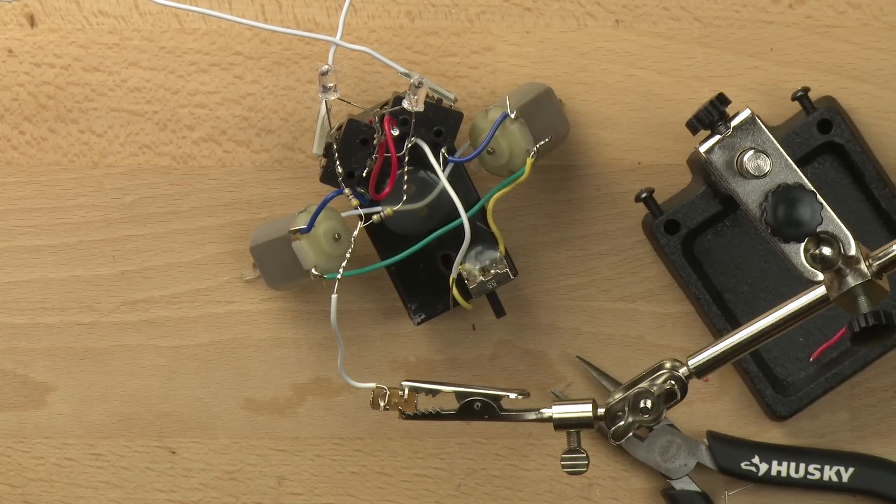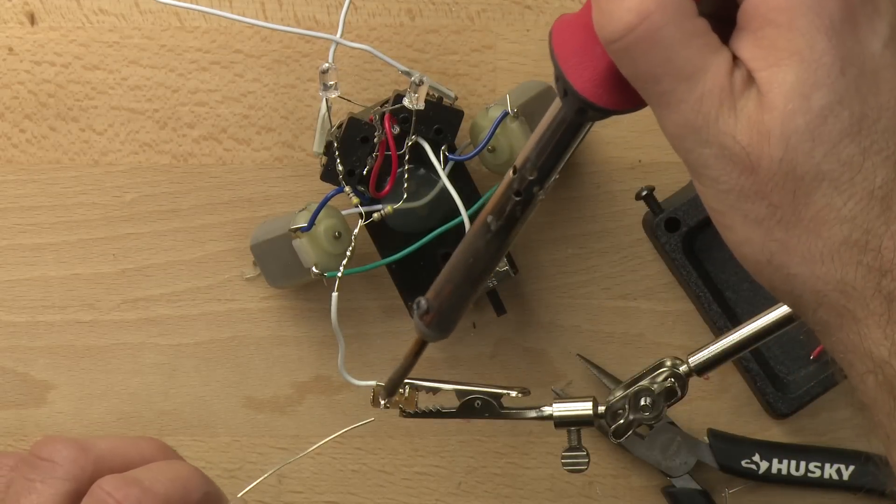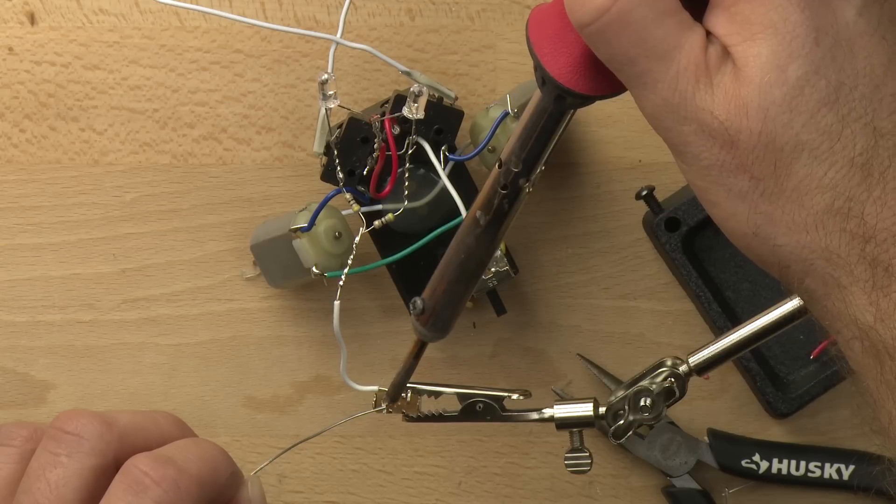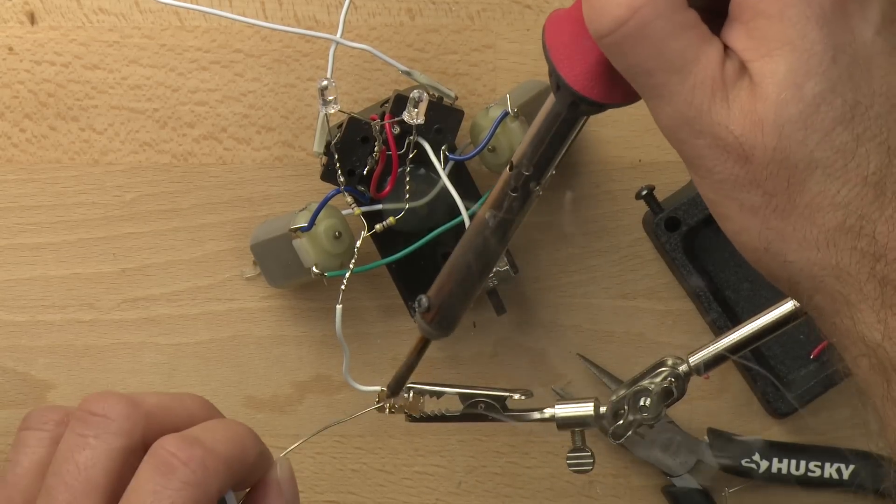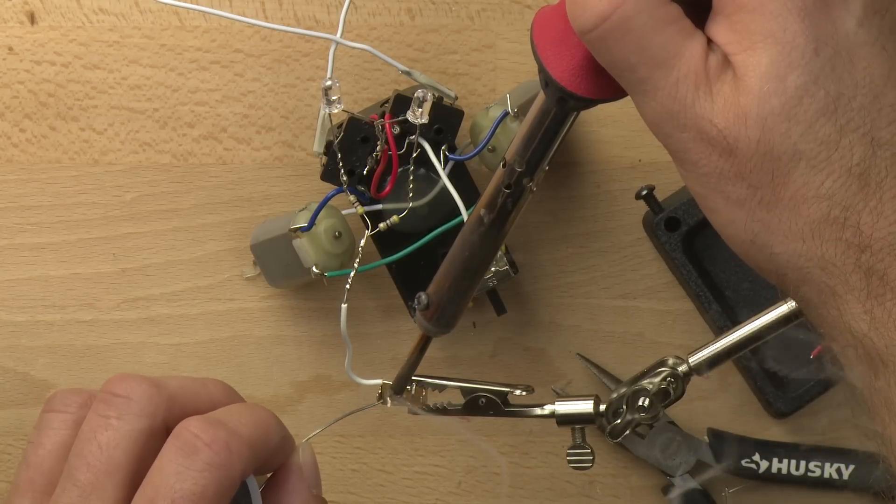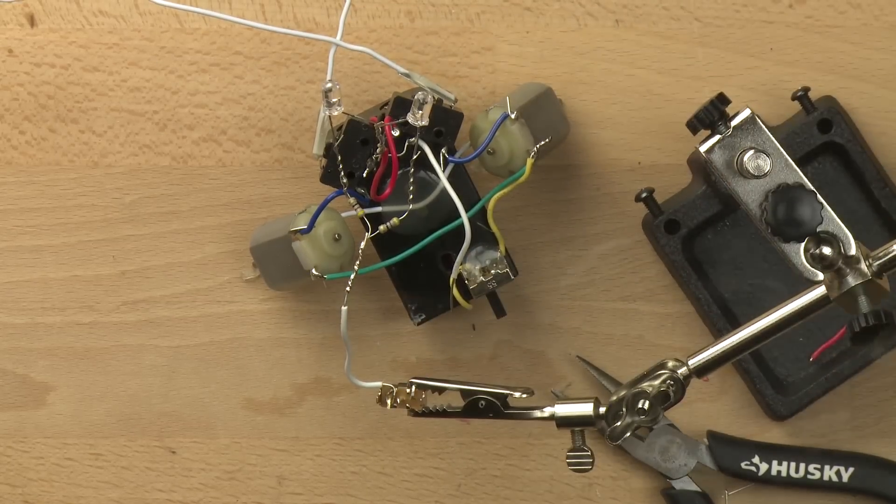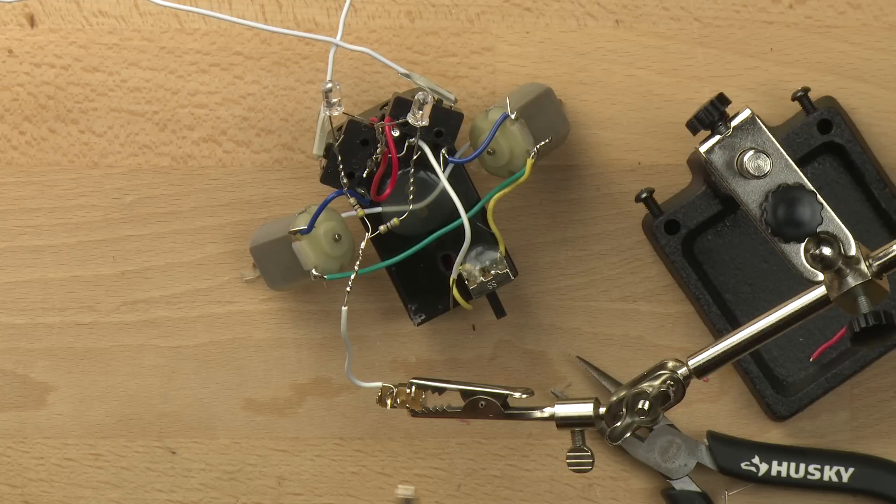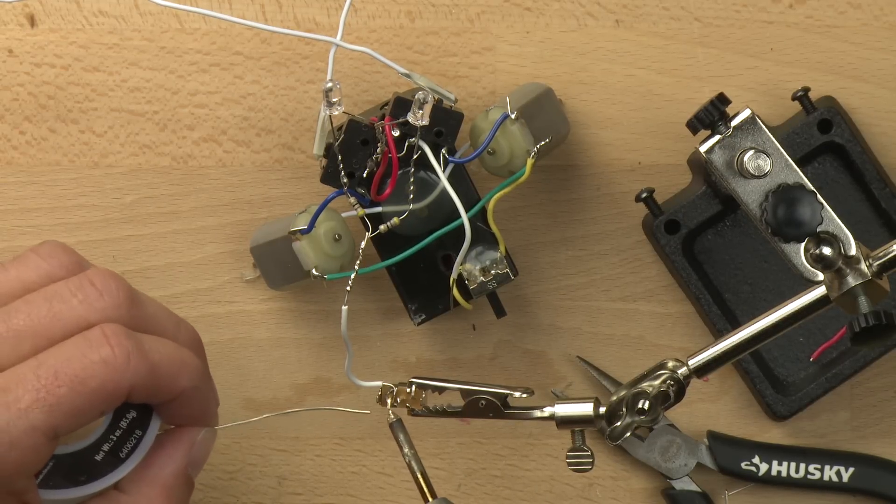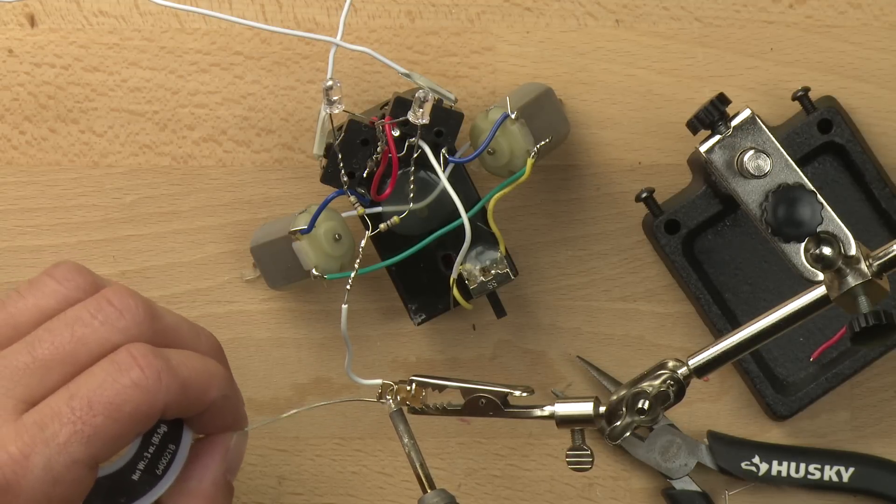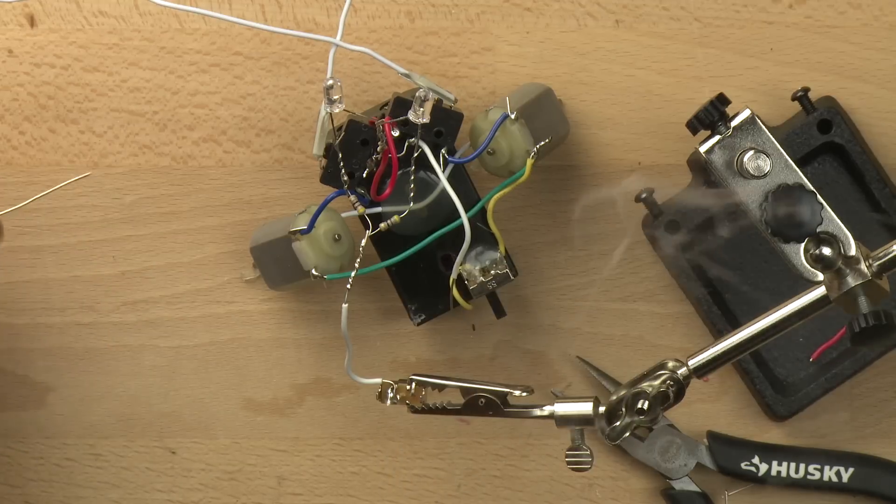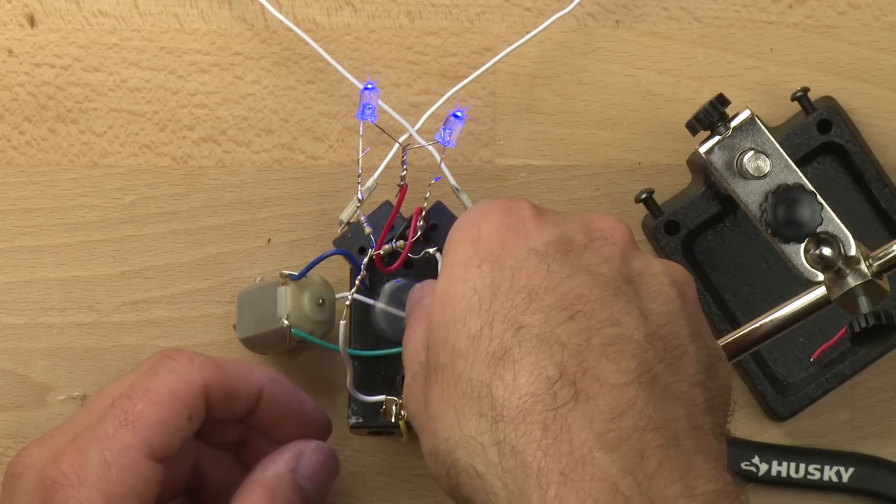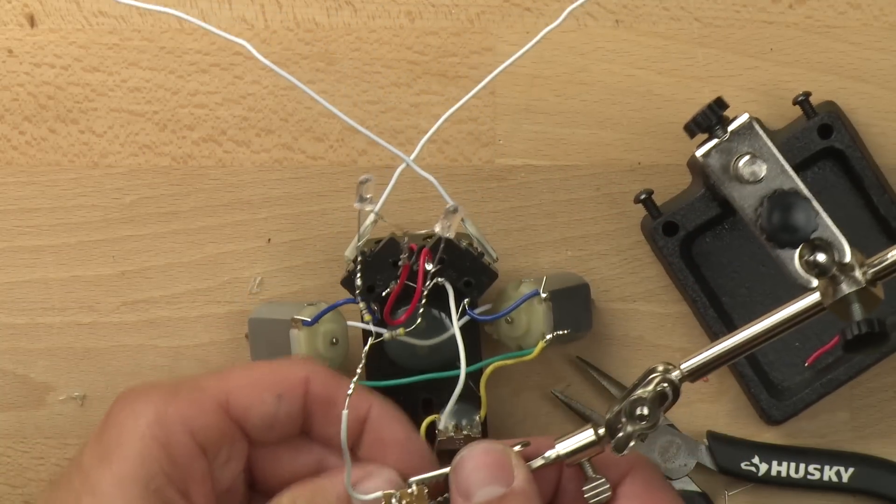And I'm going to go ahead and solder that one before we do the other side. And that did not actually have very much solder flow. So I'm going to have to reheat this and see if we can get it to flow. There we go. That's how we want it to look. OK. Now you can see the switch is on and the lights, the eyes work. Let's turn it off.